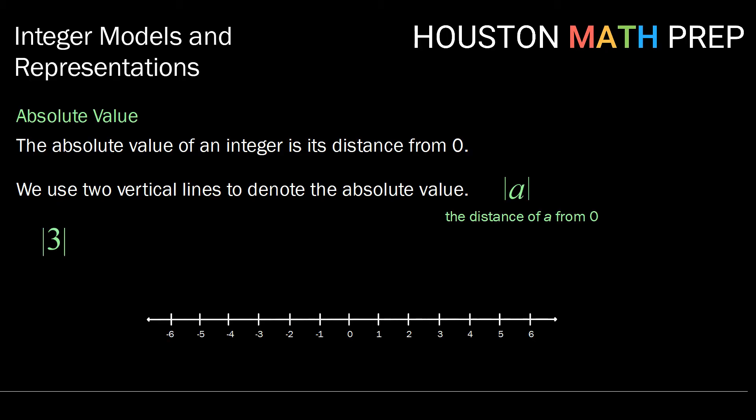Let's see that modeled. If we want to find the absolute value of 3, we can count the distance from the number zero to the number 3. One, two, three. So the absolute value of 3 is 3.